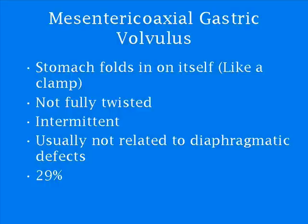To clarify how the stomach twists in mesentericoaxial gastric volvulus, imagine that the stomach folds in on itself like a clamp. In mesentericoaxial, the twists are not full because it is always incomplete, and this can happen intermittently. It's usually not related to diaphragmatic defects. Mesentericoaxial gastric volvulus occurs in 29% of all diagnosed gastric volvulus cases, so it's less common than organoaxial gastric volvulus.